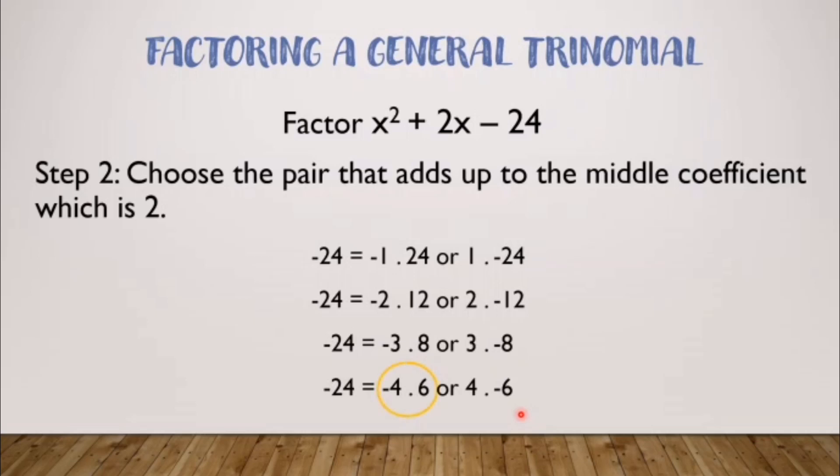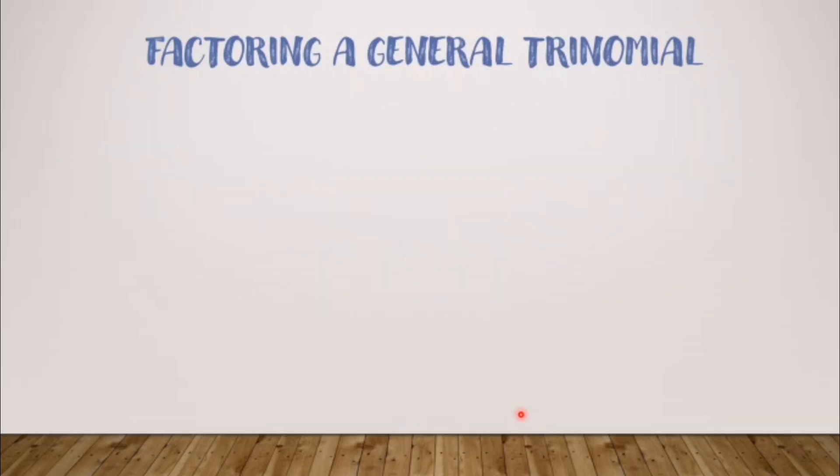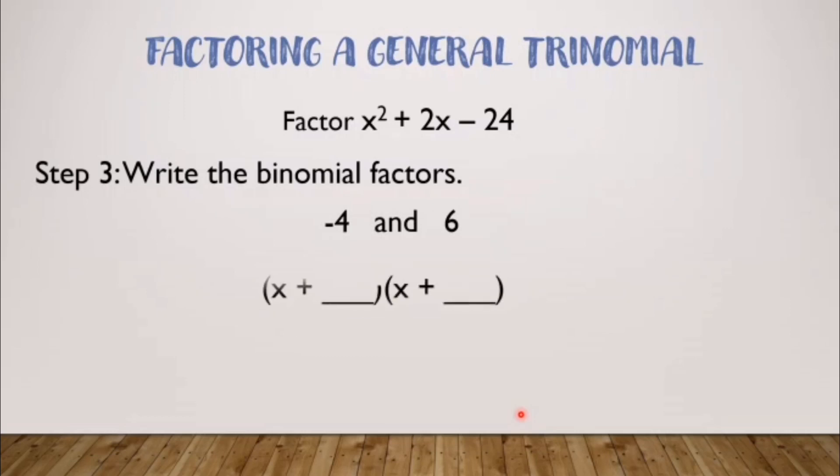That will give us our step 3, which is writing the binomial factors. Since we have negative 4 and 6, we'll write the quantity of x plus blank times x plus blank. And then we'll place negative 4 and 6. But as you notice, this is negative. So we have to indicate the sign of the negative. That will give us the final answer: x minus 4 times x plus 6.